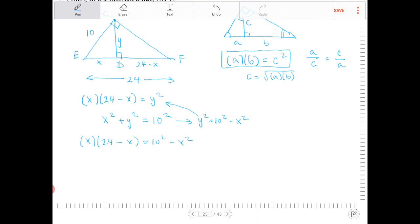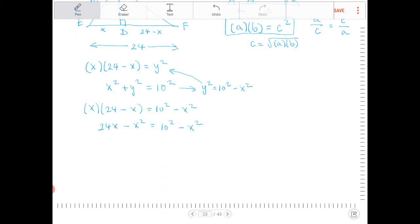I will now distribute the X on the left-hand side and I get 24X minus X squared is equal to 10 squared minus X squared. And if you look at this, the variables just start dropping out. They start eliminating. I have X squares on both sides, negative X squares on both sides. So I can add both sides by X squared and I'm left with 24X is equal to 100.